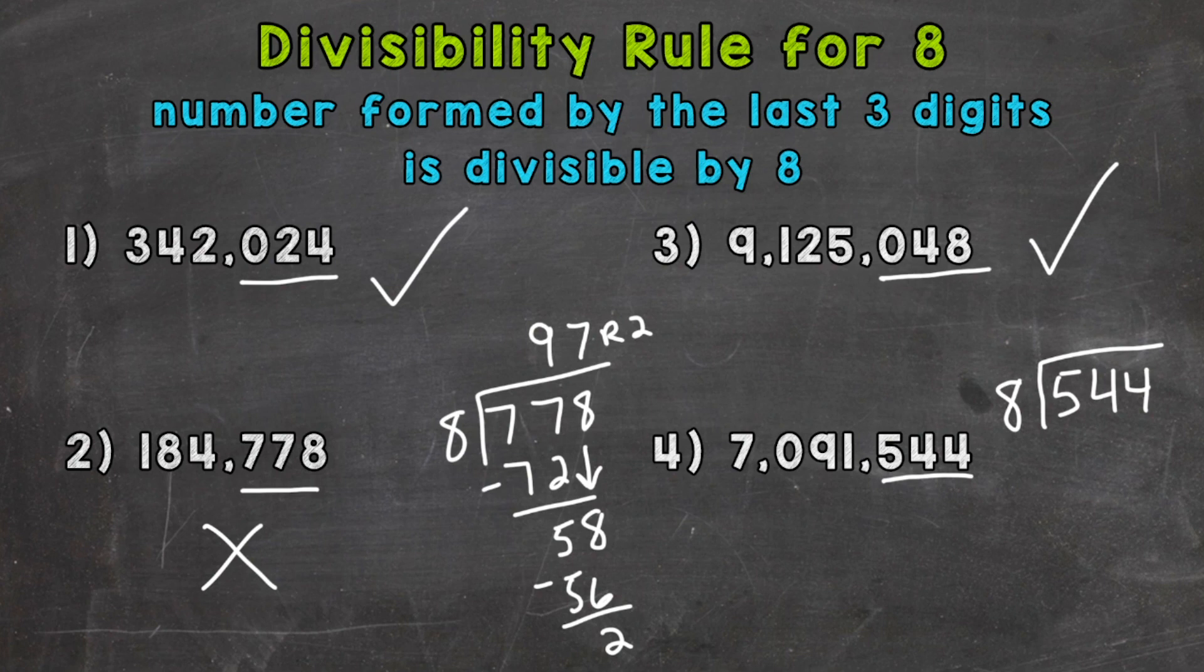We'll start with 54 divided by 8. So how many whole groups of 8 out of 54? Well, 6. That's going to get us to 48. We'll subtract, and we get 6.